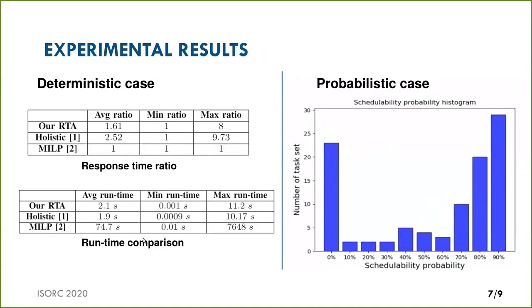For the probabilistic analysis, we ran our analysis on 100 generated task sets. We note that a significant number of task sets are schedulable with high probability, about 18 to 19 percent, while deterministic analysis would reject all these task sets.